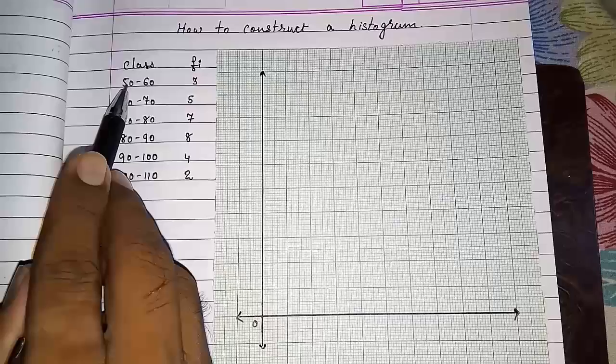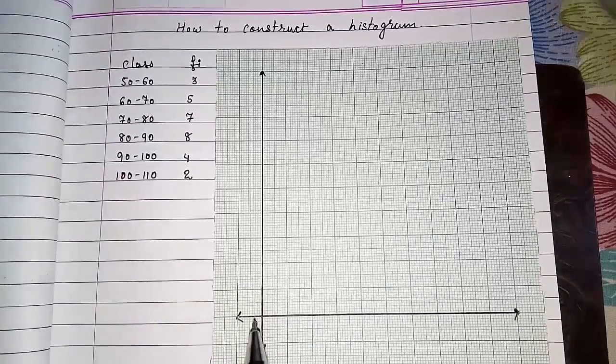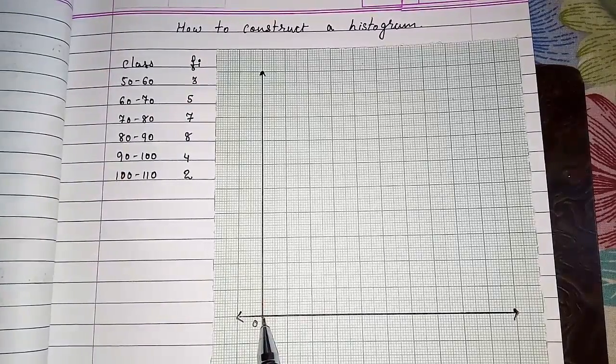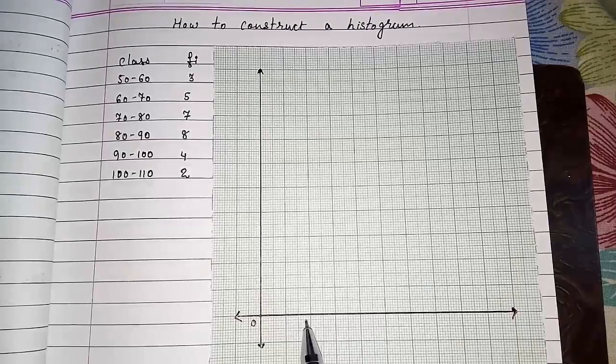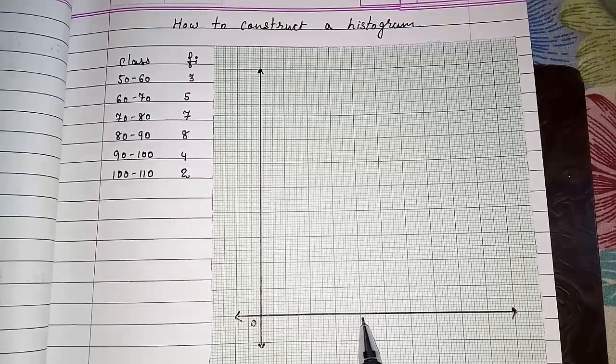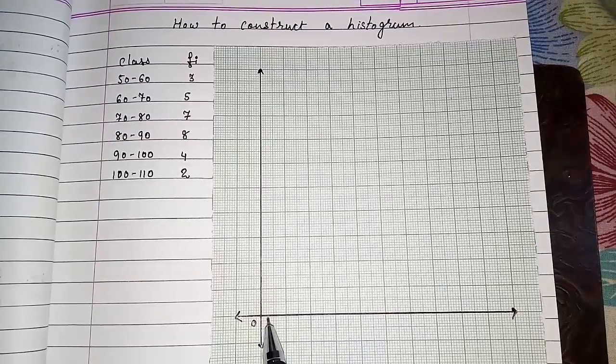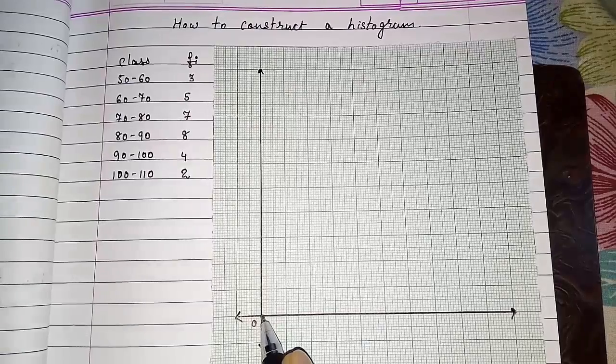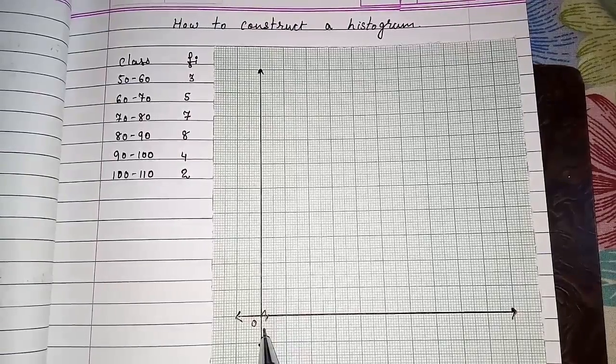Now look at the first class interval. This is 50. We have to start with 0. So if I will start here 50, 60, 70, 80, then what about 10, 20 and 30? So first we have to use a zigzag sign.